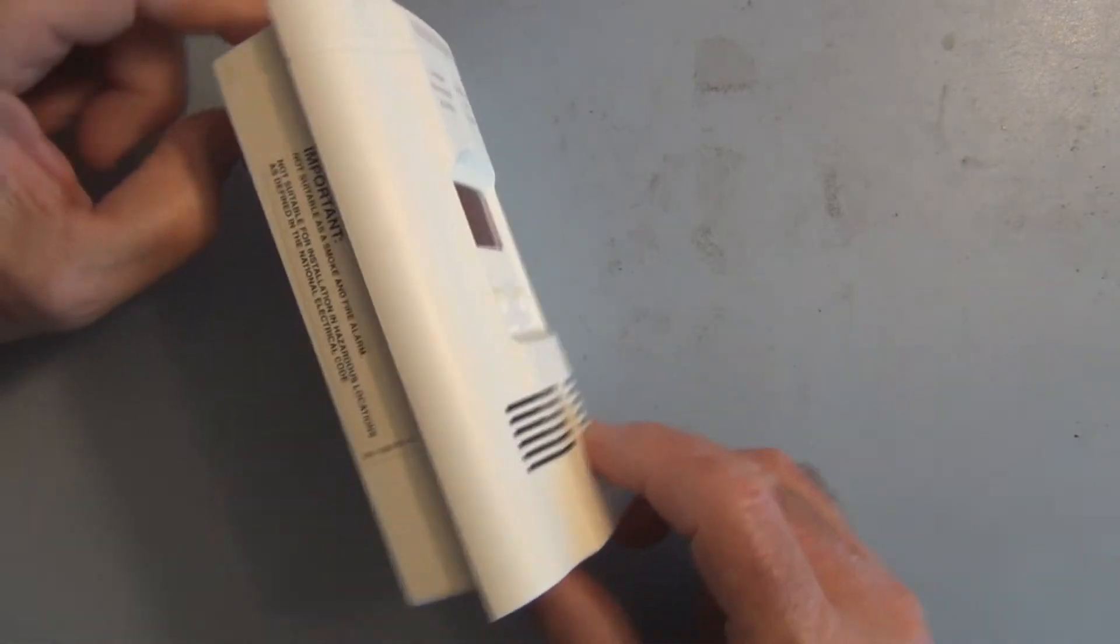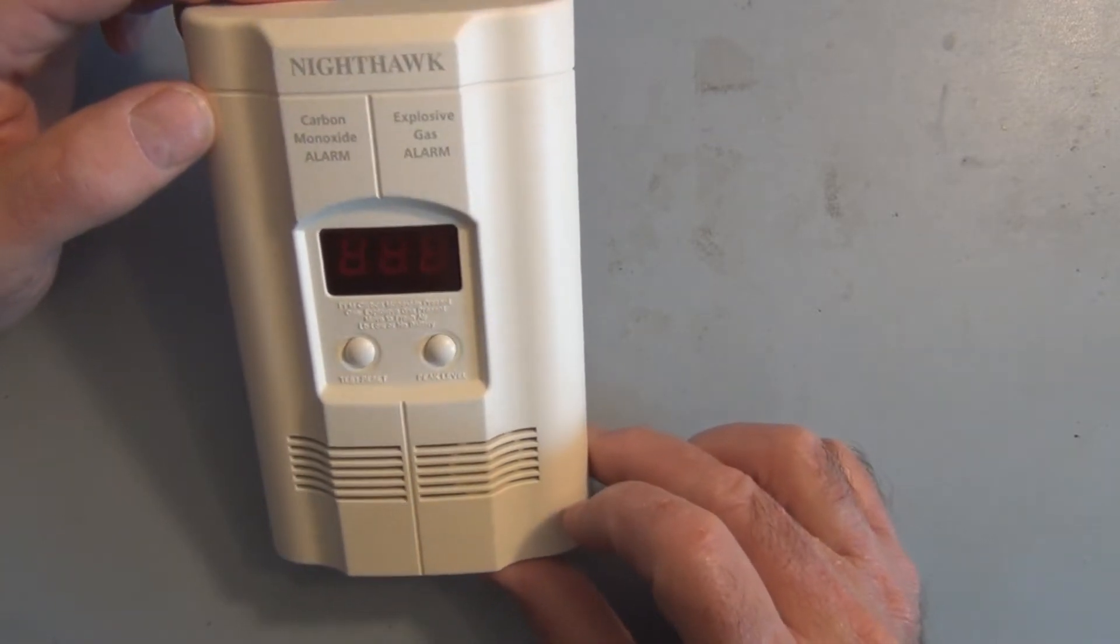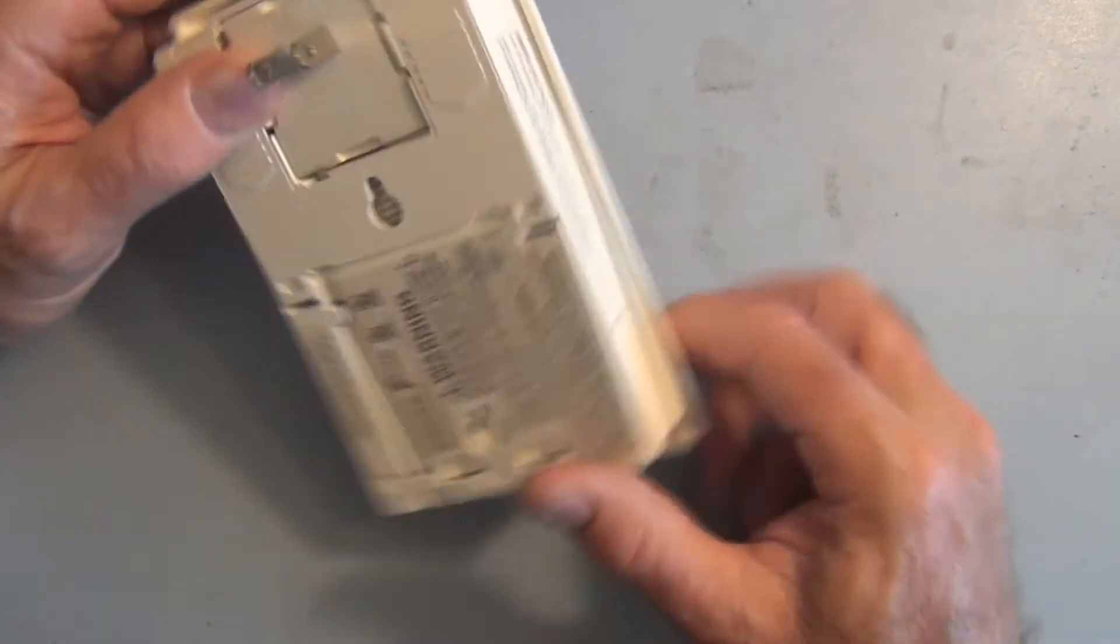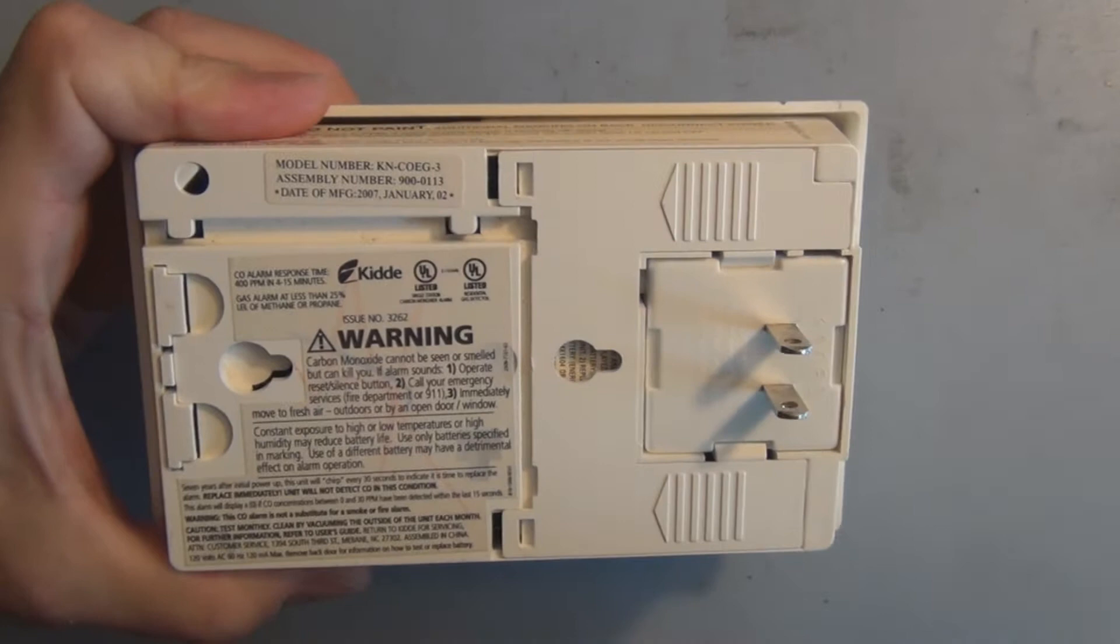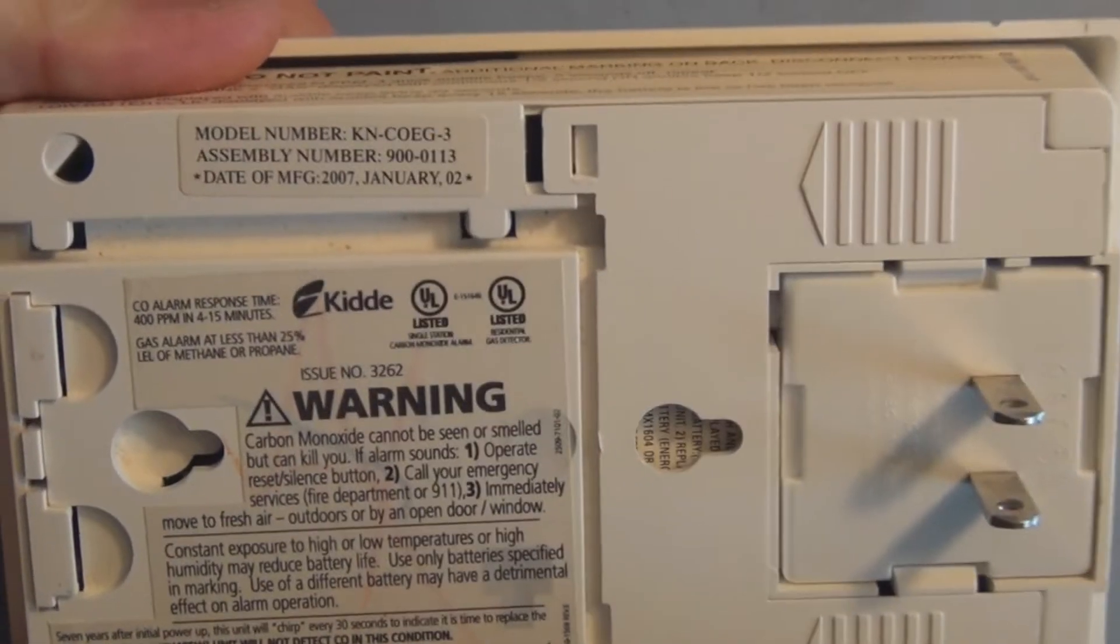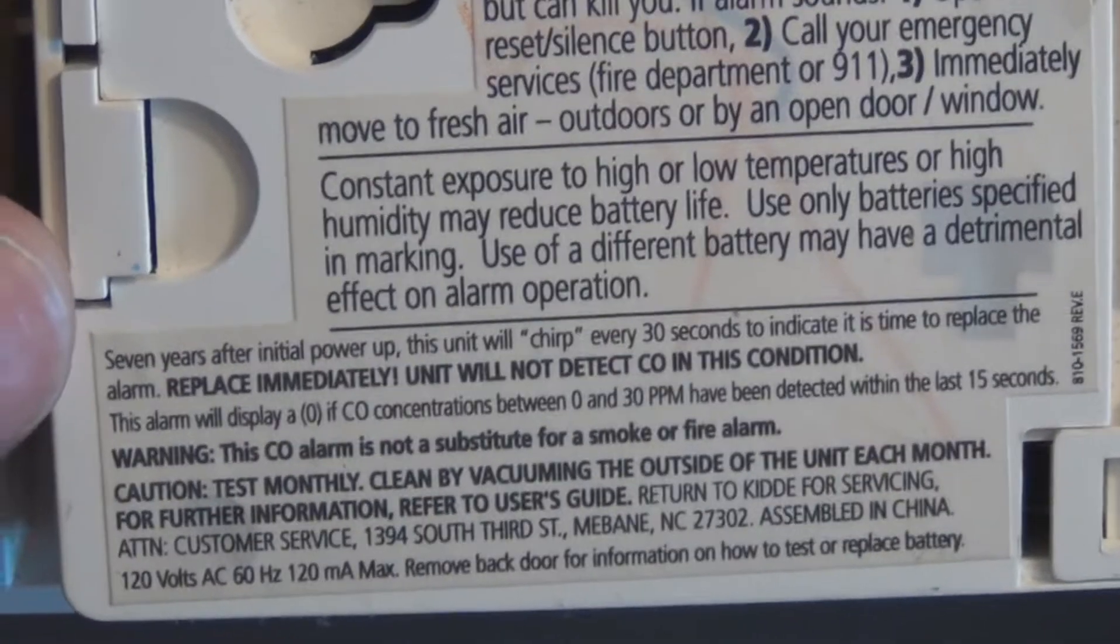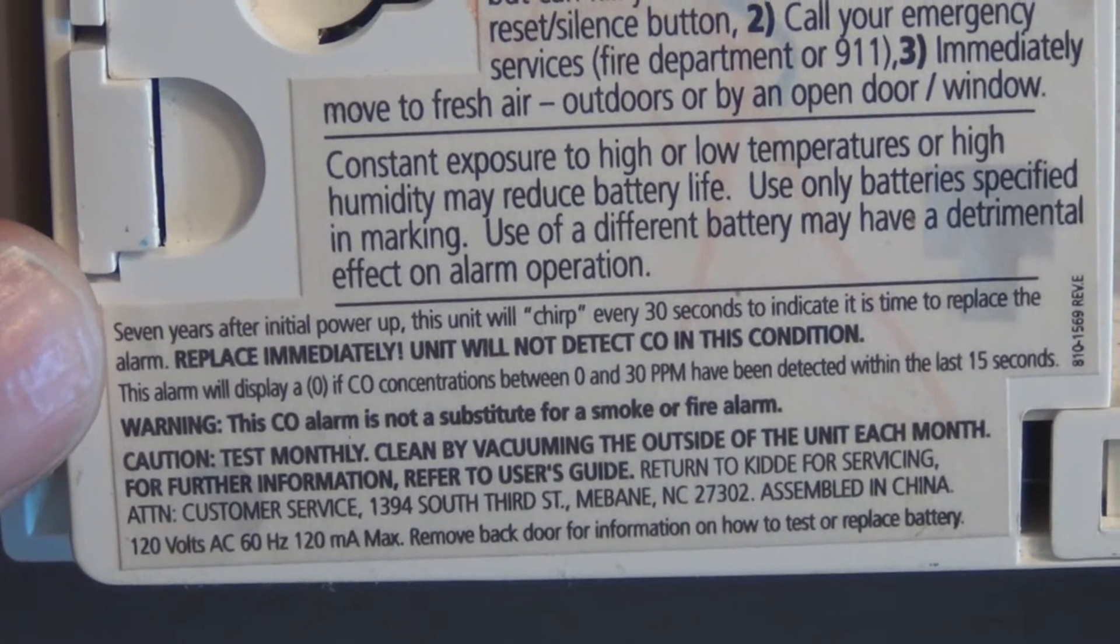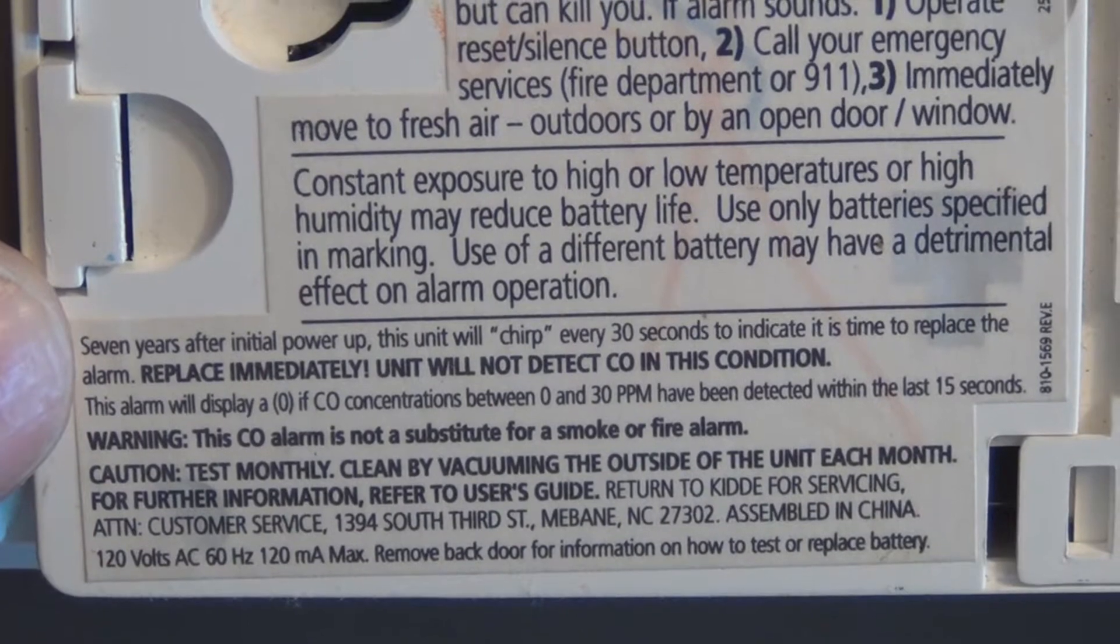There's another reason why these things also start to eventually beep and it doesn't correct itself when you change the battery. That's because they have built-in obsolescence. This one here, it's seven years. The manufacturer's date on this, if we zoom in here, was manufactured in January 2007. And if you look at the fine print, it's actually the smallest print on here. It mentions right here, seven years after initial power-up, this unit will chirp every 30 seconds to indicate it's time to replace the alarm.